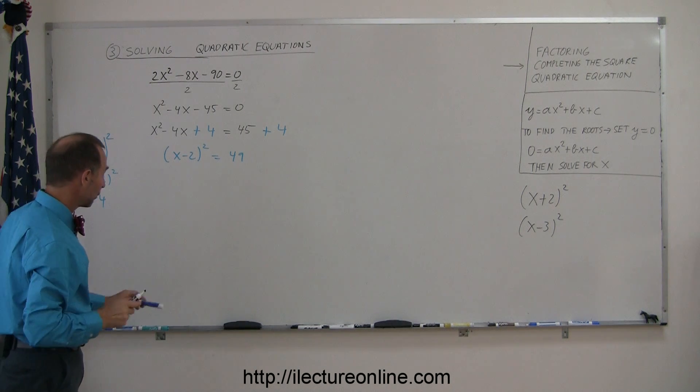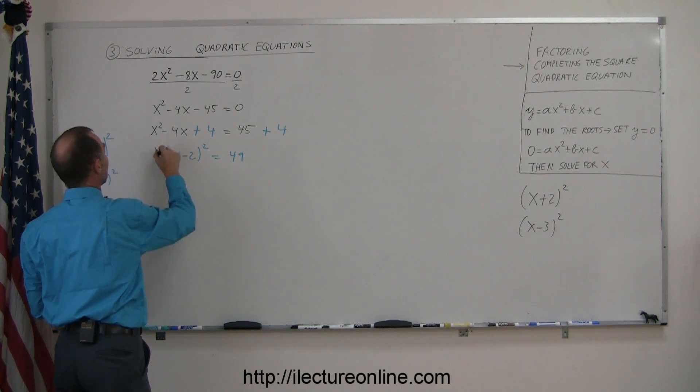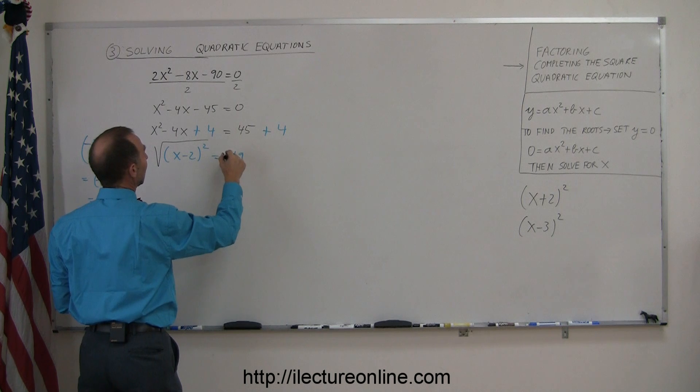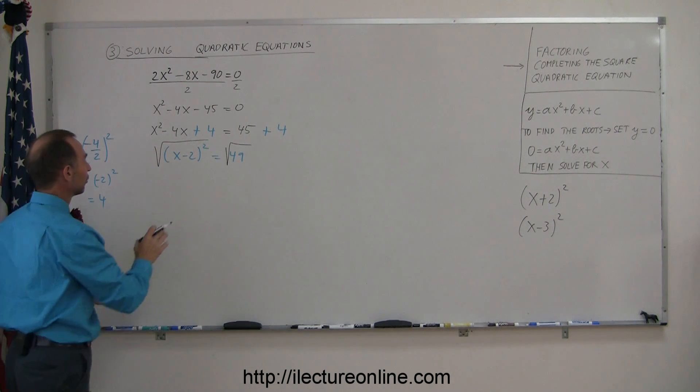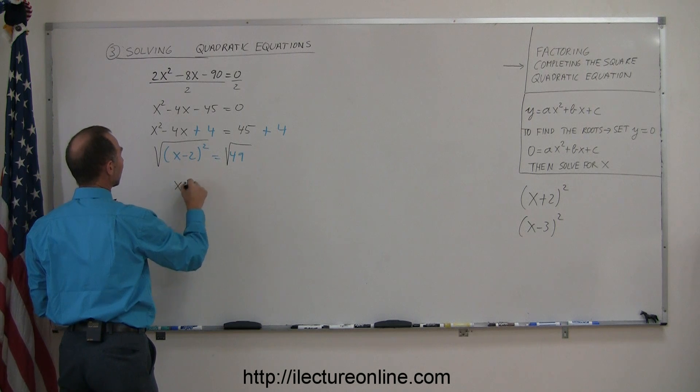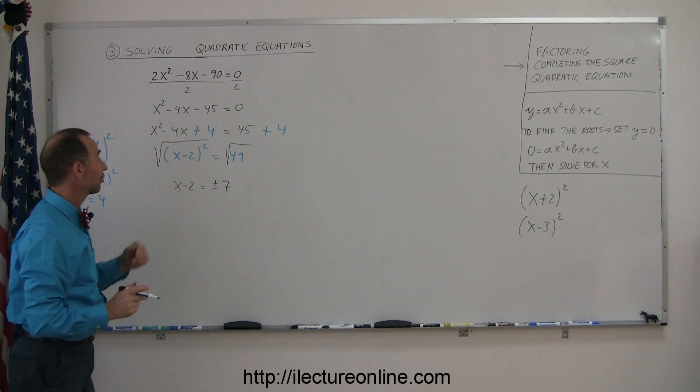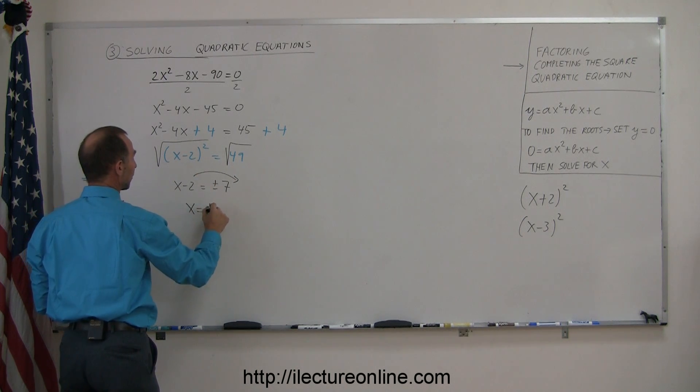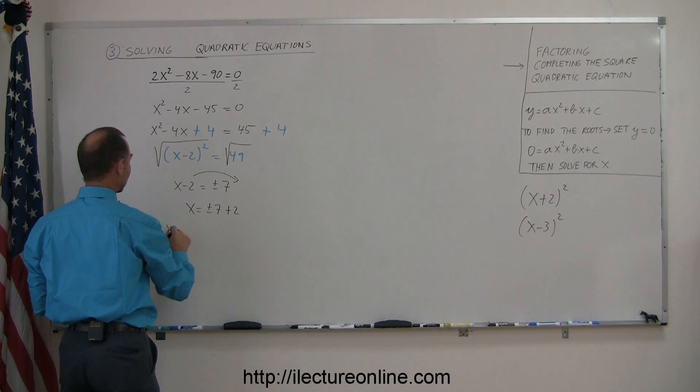Now we take the square root of both sides. This becomes x minus 2, and the square root of the right side becomes plus or minus 7. So we write x minus 2 equals plus or minus 7. Moving the minus 2 to the right side, we get x equals plus or minus 7 plus 2.